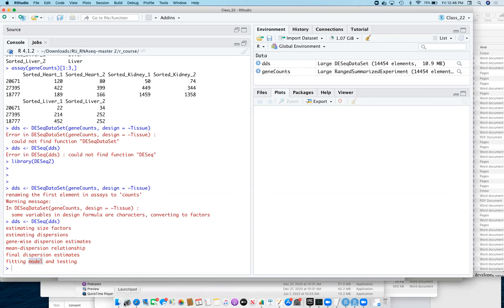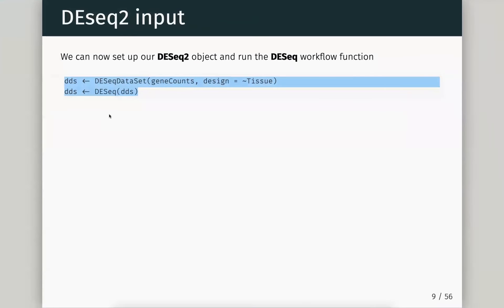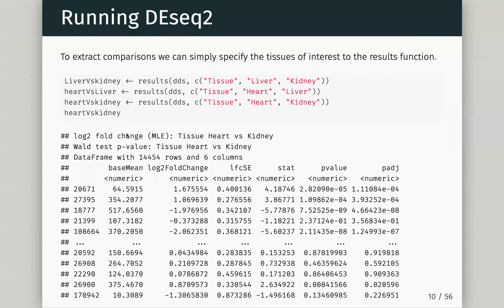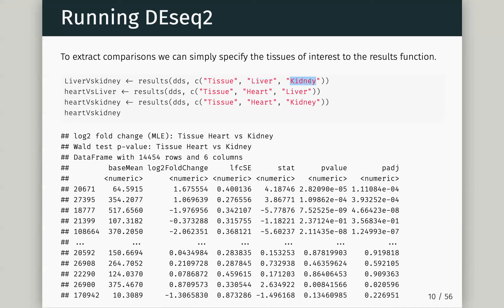Once we have that, we can start to do some very simple tests and do our analysis or comparison of sample groups. Here we just use the results function — we pass our DESeq2 object, and then we list the contrast we want to compare. It's usually a vector of length three, where we have the group we want to test as the first value, the second is the value we want as our test, and the third value is our control. So it's liver minus kidney here, over the tissue group.